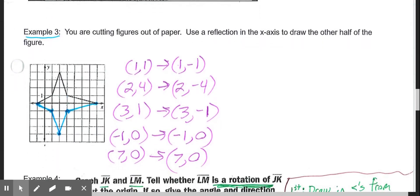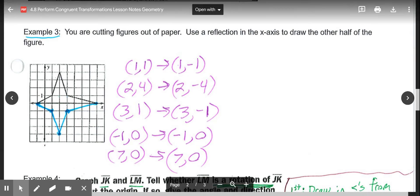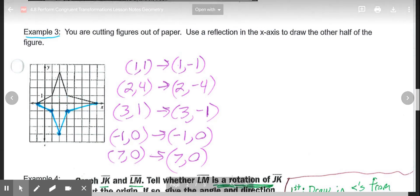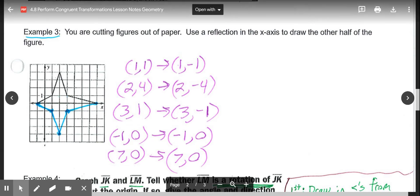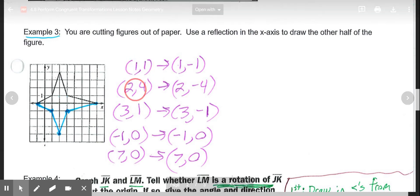So looking at those rules, it says you're cutting figures out of paper, use a reflection in the x-axis to draw the other half of the figure. To reflect a figure we reflect the vertices or the endpoints. So we have 1, 2, 3, 4, 5 points on that original to reflect: one point here, one point here, one here, one there, and one there. So the points on the original figure in black are (1, 1), (2, 4), (3, 1), (-1, 0), and (7, 0).